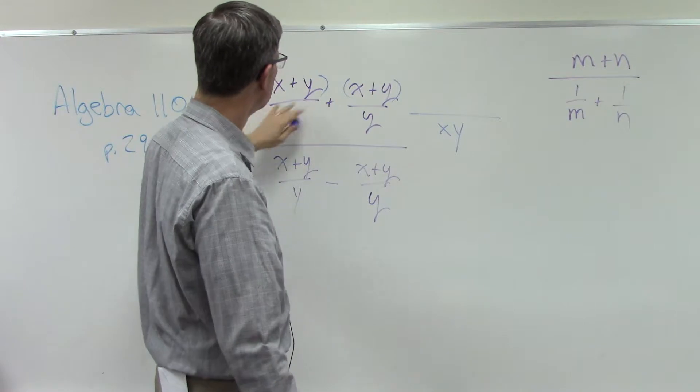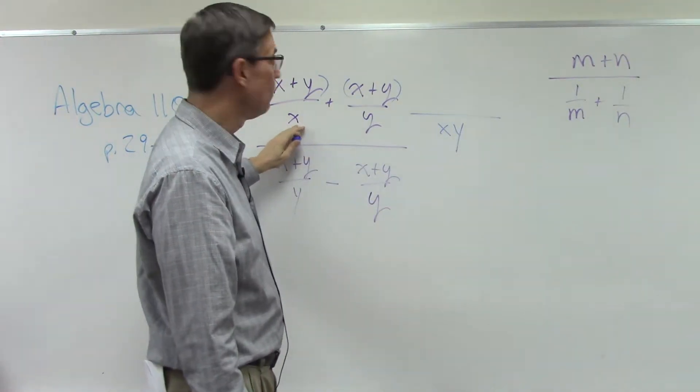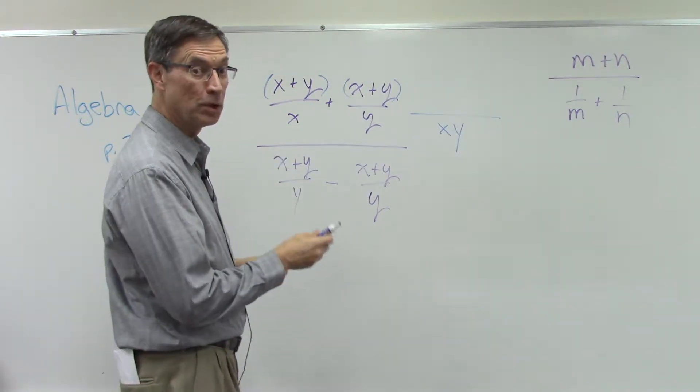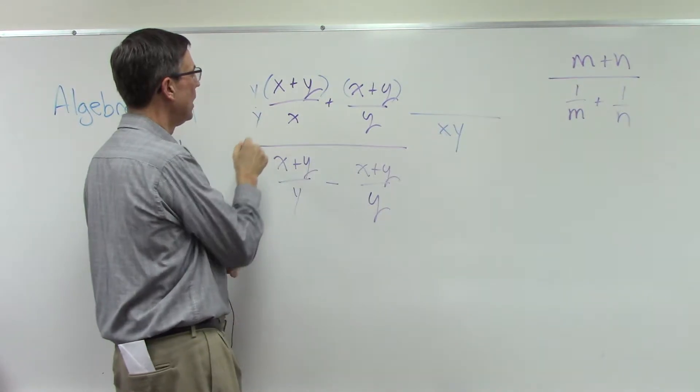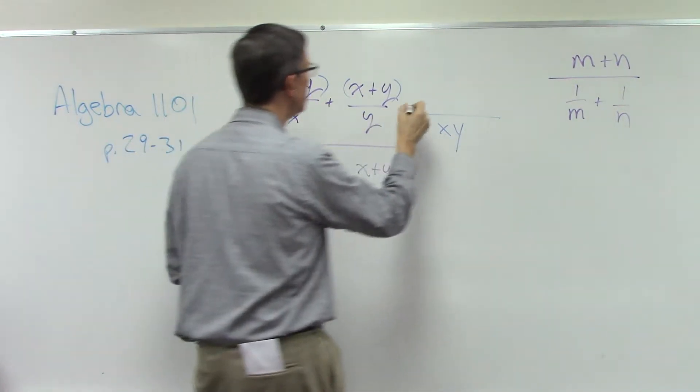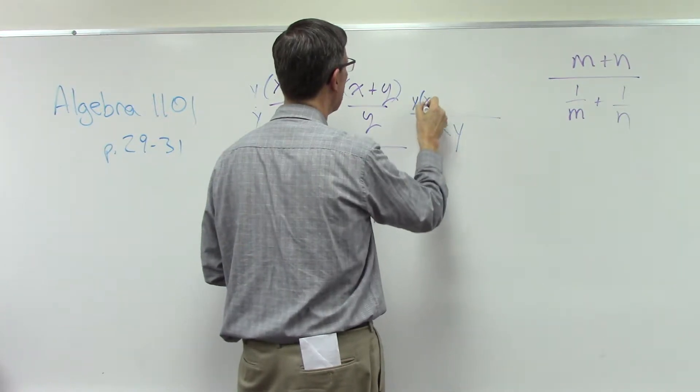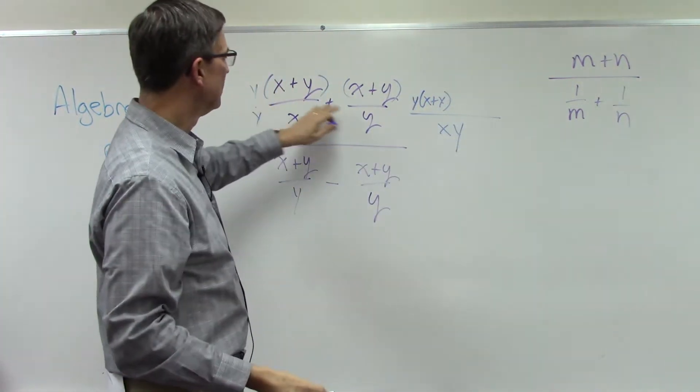This term right here to get xy is missing something. It's missing the y. Everybody see why? So we have to multiply top and bottom by y. So y times x is xy, y times the quantity x plus y. And we can just leave it like that for now.